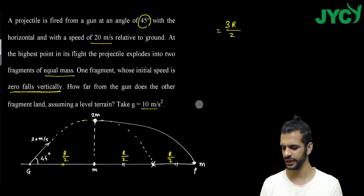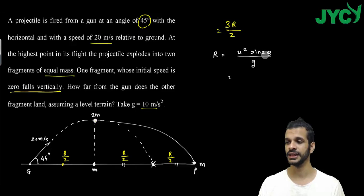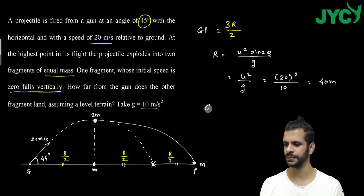So I have to calculate the range. Now the range formula you know, range equals u square sine 2 theta divided by g. Now sine 2 into 45, which is sine 90, so this becomes u square by g. So u is 20, so 20 square divided by 10, which equals 40 meter. So my answer, that is distance between gun and that point P, is equal to 3 into 40 by 2 which equals 60 meter.